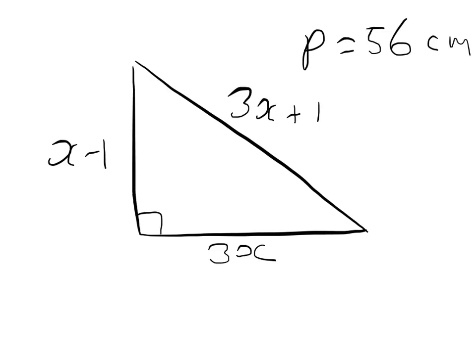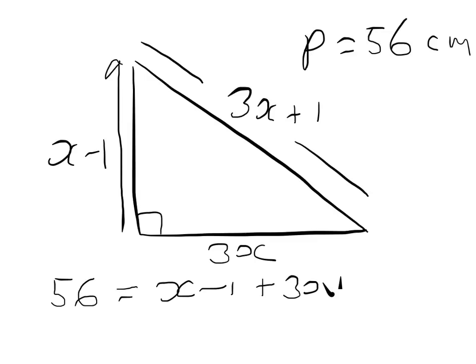So what we need to do is connect our perimeter of 56 to the x's. Now to go all the way around the shape, we're going to need to go x minus 1, which takes us up there. Then we come down the other side, which is to add on 3x plus 1, and then finally back through here to where we started, which gives us another 3x.